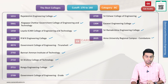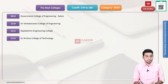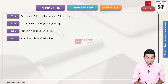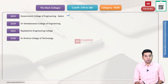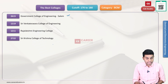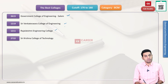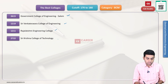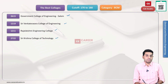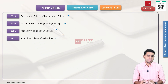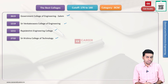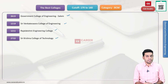Next category — we have BCM category. College codes: 2615 Government College of Engineering, 1219 Shree Venkateshwara College of Engineering, 1211 Rajalakshmi Engineering College, 2722 Shree Krishna College of Technology. These are the colleges in the BCM category. Note that 3.5% of seats in the BCM category are reserved, so students will have preference accordingly.